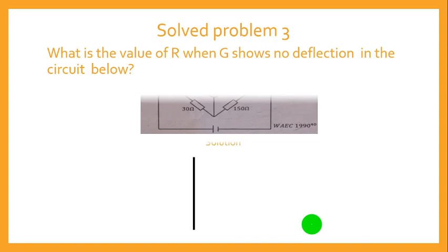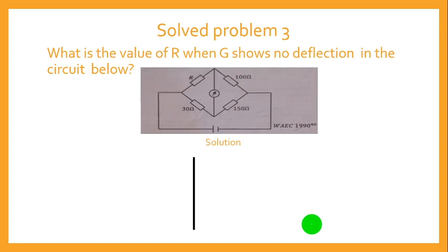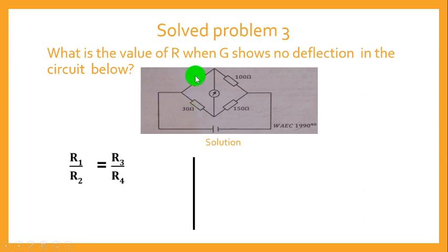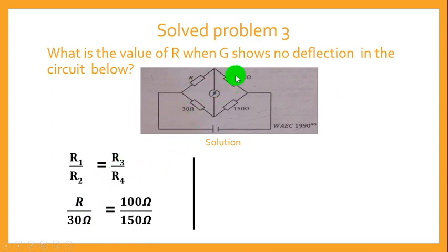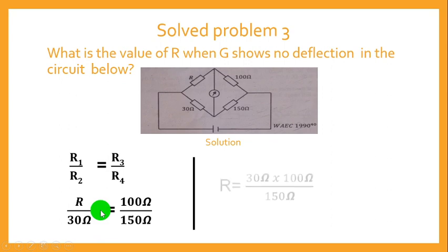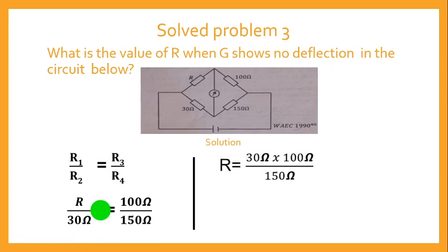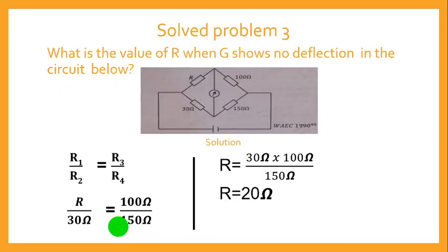The third question: What is the value of R when D shows no deflection in the Wheatstone Bridge circuit? Using the formula R1 over R2 equals R3 over R4, we have R1 equals R, R2 equals 30 ohms, R3 equals 100 ohms, and R4 equals 150 ohms. Cross-multiplying and making R the subject gives R equals 30 times 100 divided by 150, which equals 20 ohms.